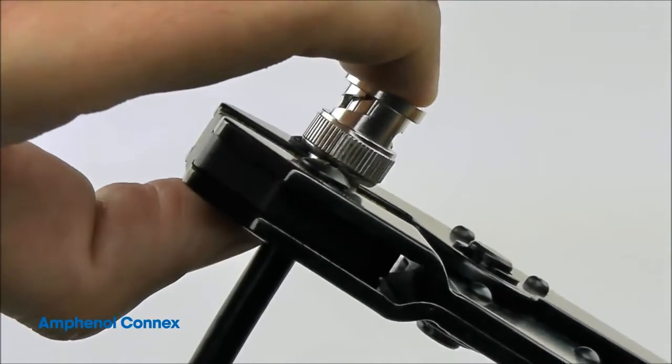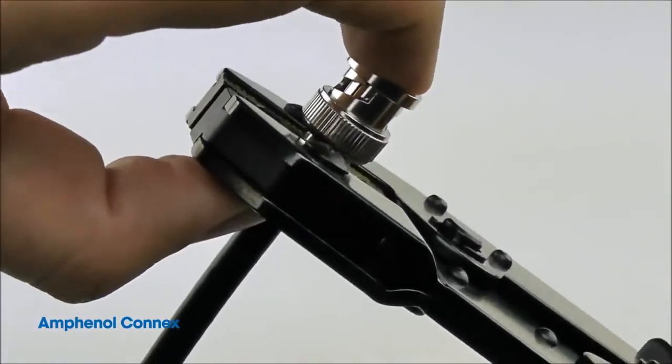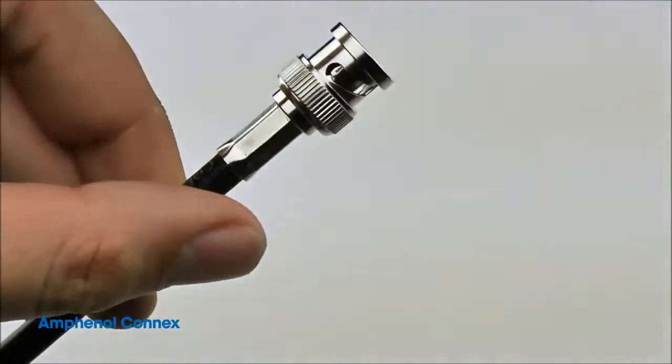Now, fully close the tool to crimp the ferrule. When the tool is closed completely, the ratchet action will release and the tool will open.